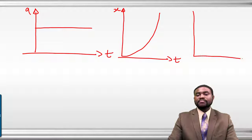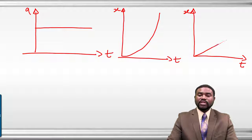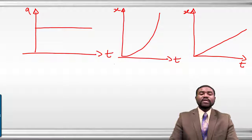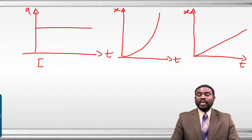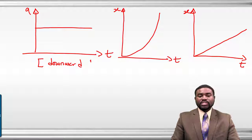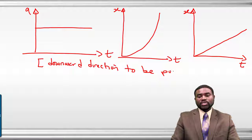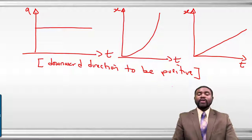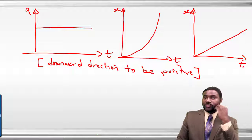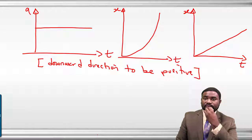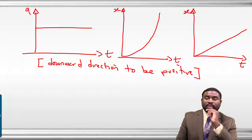The graph of V versus T will be a straight line. This is only true if we consider the downward direction to be positive.